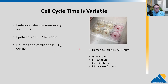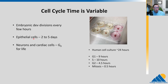The cell cycle and its timing can be variable. Depending on the cell, they might divide frequently or they might never divide. Looking at embryonic cell division, very early in development, cells might be dividing every few hours. Later in life in a mature human, epithelial skin cells divide every two to five days. Neurons and cardiac cells go into G0, that quiescent phase, and don't divide for the rest of the organism's life.